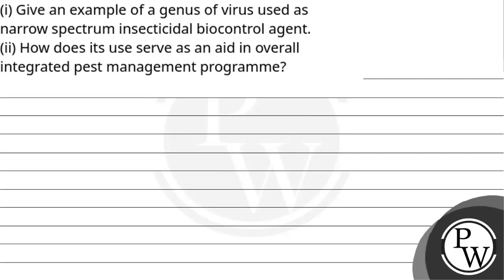Hello, let's see this question. The question says: first, give an example of a genus of virus used as a narrow spectrum insecticidal biocontrol agent. Second, how does it serve as an aid in an overall integrated pest management program?